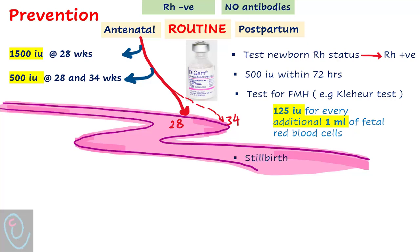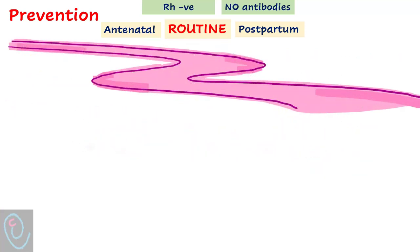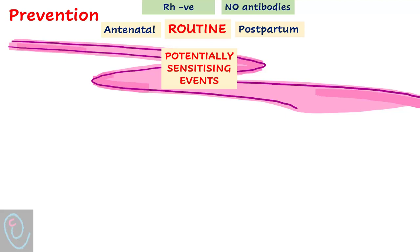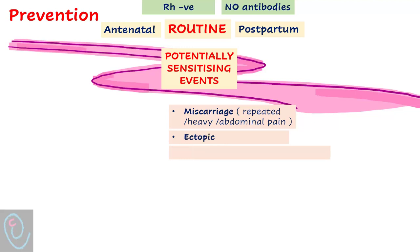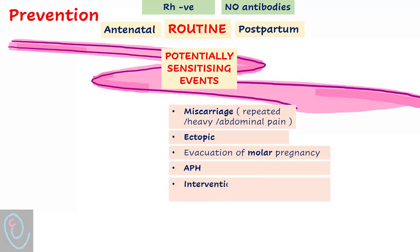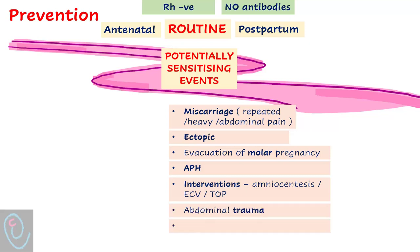If the pregnancy is a stillbirth and there is no sample to identify fetal RH status, Anti-D should still be given. Anti-D is also given for potentially sensitizing events, including bleeding in early pregnancy such as miscarriage (if it is repeated, heavy, or associated with abdominal pain), ectopic pregnancy, evacuation of molar pregnancy, antepartum hemorrhage, interventions such as amniocentesis, external cephalic version, or termination of pregnancy.